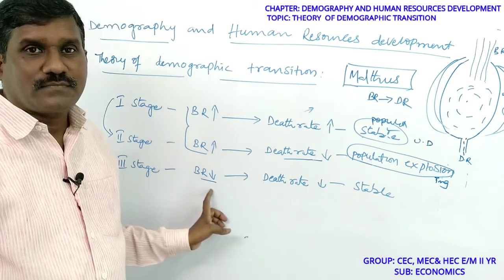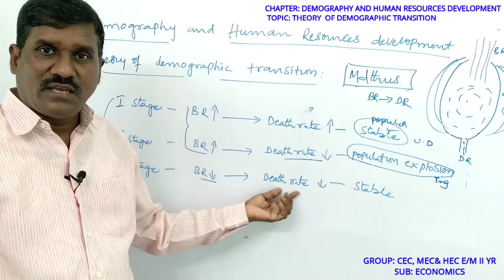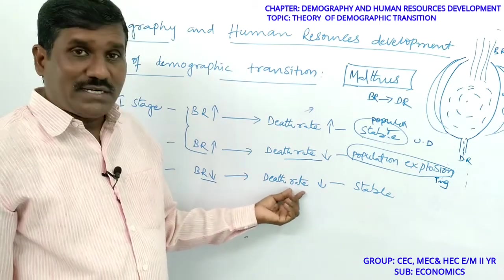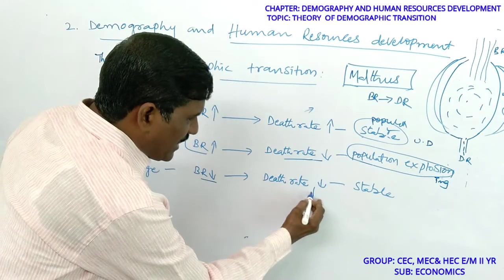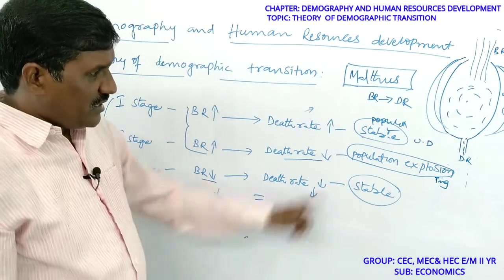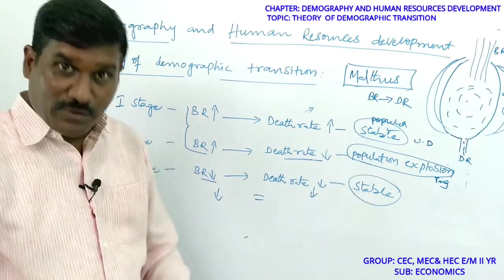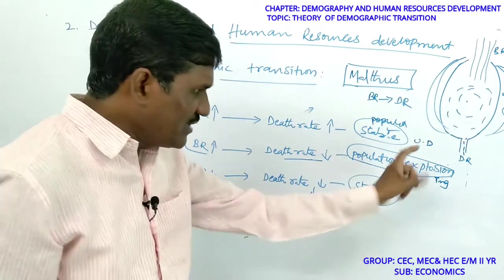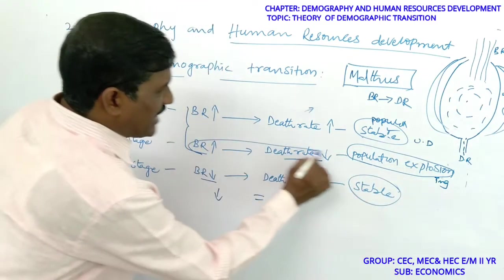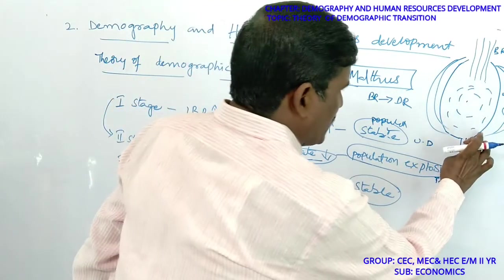In the third stage, death rate is also very low due to good sanitation, good health facilities, good medical facilities, good environment, and no epidemics. Both birth rate and death rate decline, so population is stable. The problem exists only in the second stage — and we are currently in the second stage, suffering from population explosion.